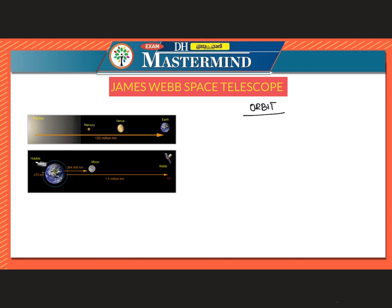Another major difference is the orbit. Hubble Space Telescope was only about 570 km away from Earth, orbiting close to our planet. James Webb Space Telescope, on the other hand, orbits approximately 1.5 million km away from Earth, at a point called Lagrange Point L2.